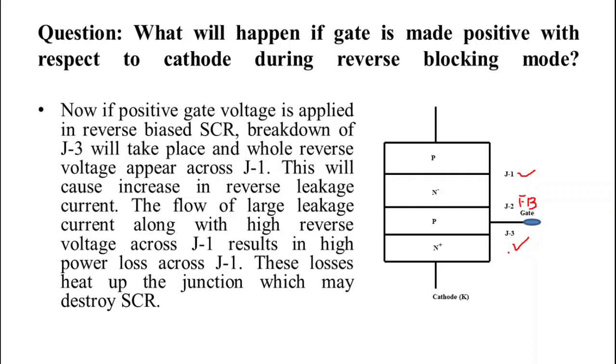J3 has low breakdown voltage as it has heavily doped layer on both sides. Junction J1 has large breakdown voltage as it has lightly doped layer on one side. So during reverse bias, J1 has most of reverse voltage appear across it.